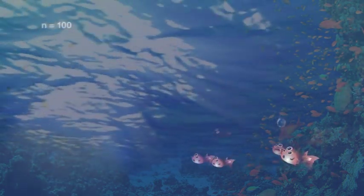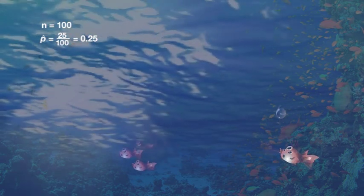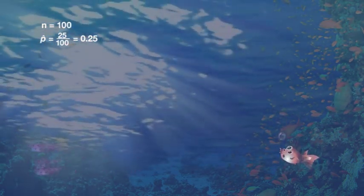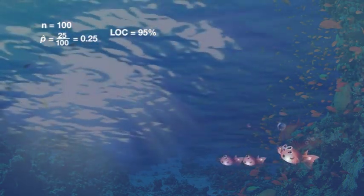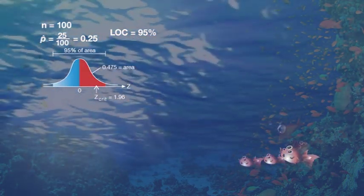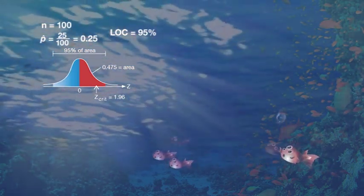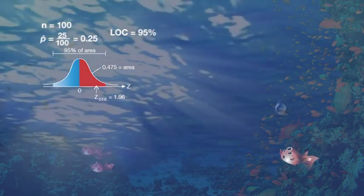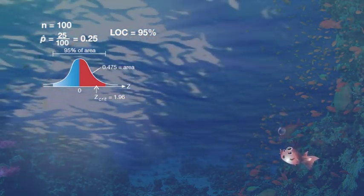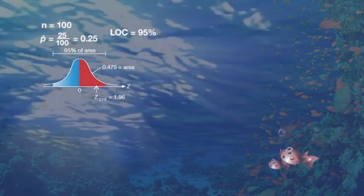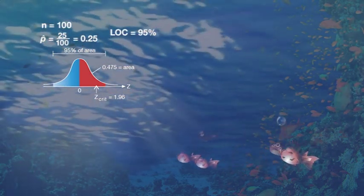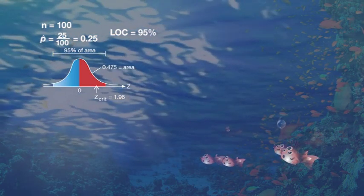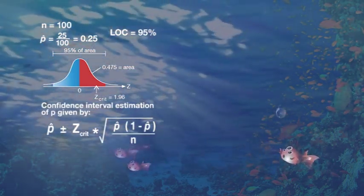We've been given that n equals 100 (total sample size) and p-hat is 25 over 100, because there are 25 freaky fish out of a total of 100 in the bucket, which is 0.25. The level of confidence is 95%. Looking at this diagram, we know that the area to the right of centre is 0.475, and looking up the standard normal distribution table we find that the critical value for z is 1.96.